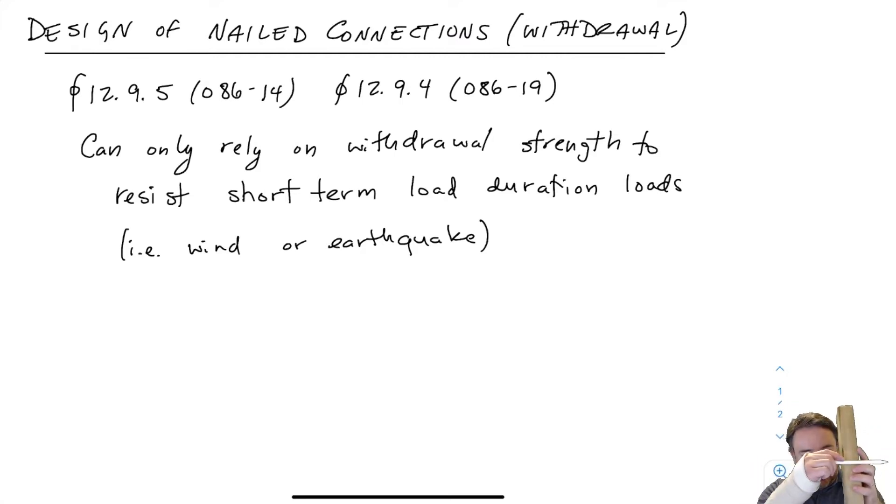A nail going through connects this piece of wood to another piece of wood or connects a piece of steel to another piece of wood like this. Then I want to figure out what is the strength of my nailed connection in withdrawal.